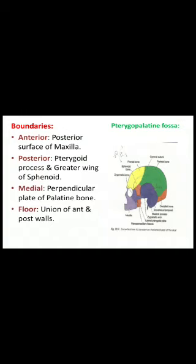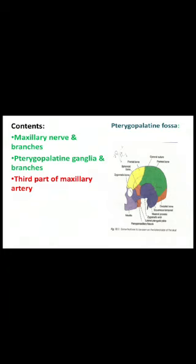Next, the Pterygopalatine Fossa. Boundaries: anteriorly, the posterior surface of the maxilla; posteriorly, the pterygoid process and greater wing of the sphenoid; medially, the perpendicular plate of the palatine bone; floor, the union of anterior and posterior walls. Contents: the maxillary nerve and its branches, the pterygopalatine ganglion and its branches, and the third part of the maxillary artery.